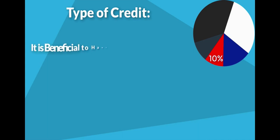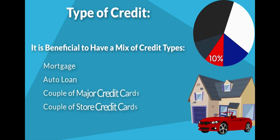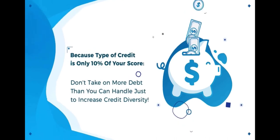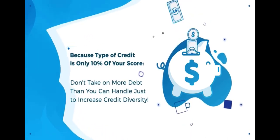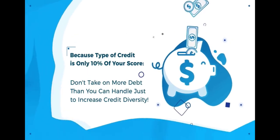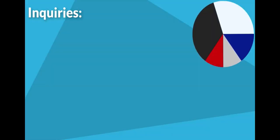This means it is beneficial to have a mix of different types of accounts, which might include a mortgage, an auto loan, a couple of major credit cards like Amex or Visa, and one or two department store or gas credit cards. Remember, though, that this category only makes up 10% of your credit score, so you shouldn't take on more debt than you can handle just to increase credit type diversity.